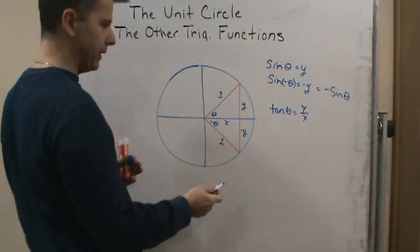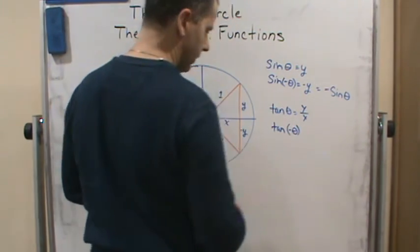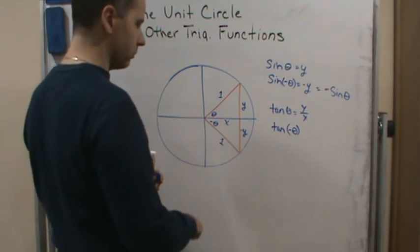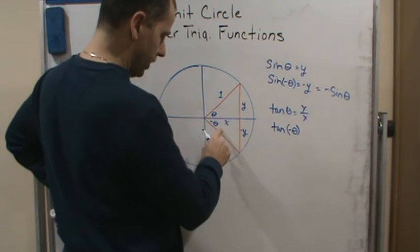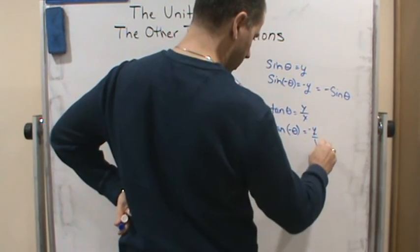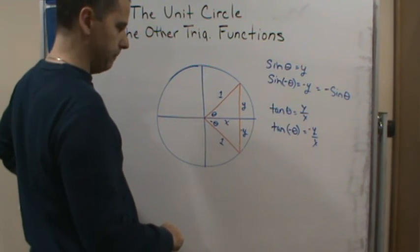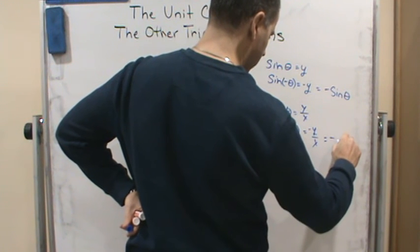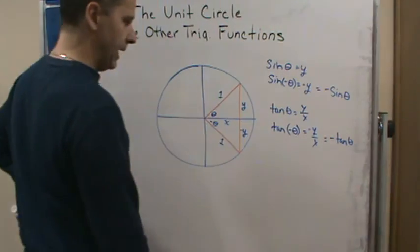Okay, now what if I put in the opposite angle? Tangent of negative theta. Well, what does that mean? Well, that's going to be negative y over x, right? Which gives me what? Negative of tangent theta.